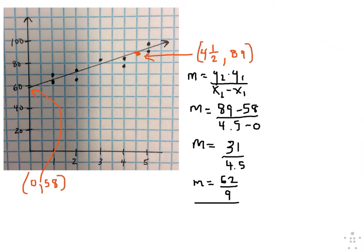We know the y-intercept is 58. So the equation of the line is y equals 62 ninths x plus 58, where x is the AP exam score and y is the final grade in percent.